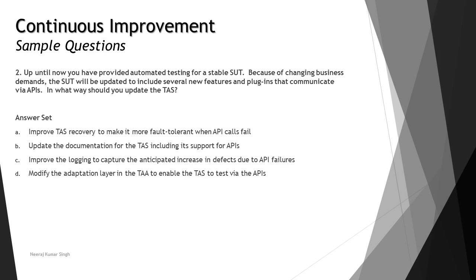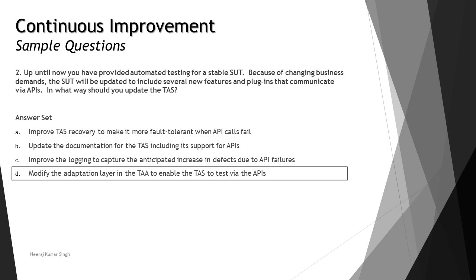Option C: improve the logging to capture the anticipated increase in defects due to API failures. This is more about defect management and quality monitoring, so C will not help update your automation solution. Option D: modify the adaptation layer in the TAA to enable the TAS to test via APIs. When you talk about architecture improvements, the adaptation layer is a major component that will help you update your TAS. So the right answer is D.